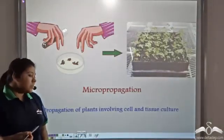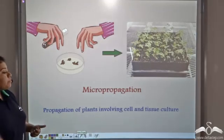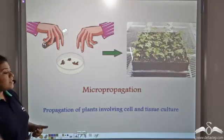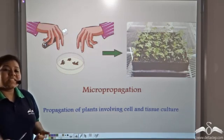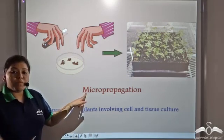So, this process by which propagation of plants are done by tissue or cell culture is known as micropropagation.